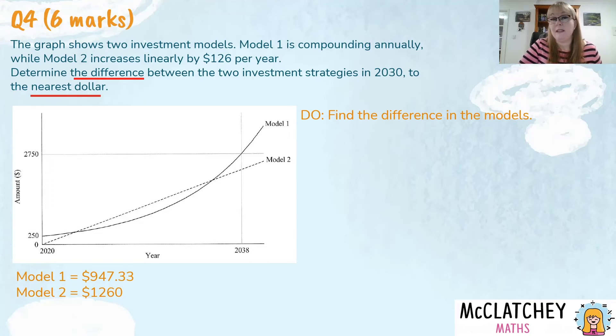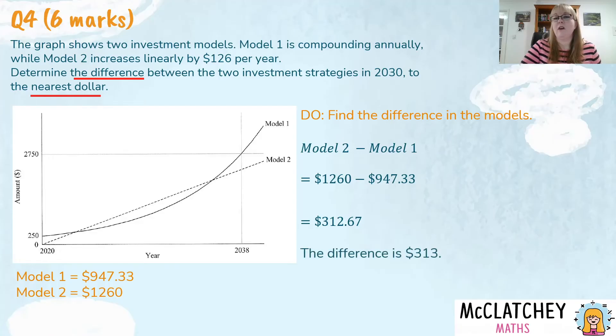So we're going to, the difference means subtract. And the answer also tells us to do it to the nearest dollar. Always check to see the rounding that's required. A lot of us are drummed in with money that it needs two decimal places, but sometimes we need to round to different amounts. Always check. Okay. So the difference will be model two, take away model one, which is $1260 take away $947, which gives us $312.67. So we need to find the difference to the nearest dollar, round that up to $313. And that is our fifth mark determining the difference to the nearest dollar.